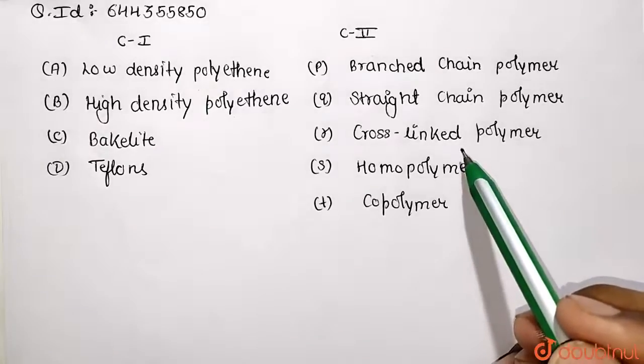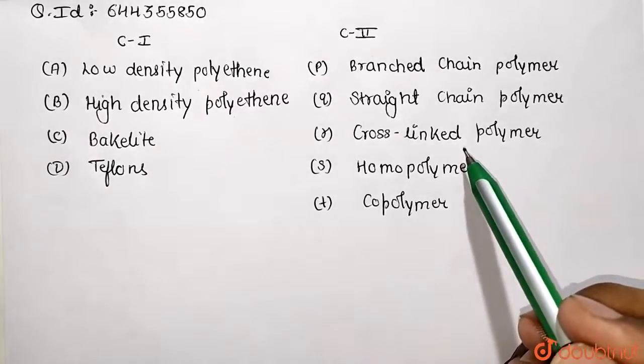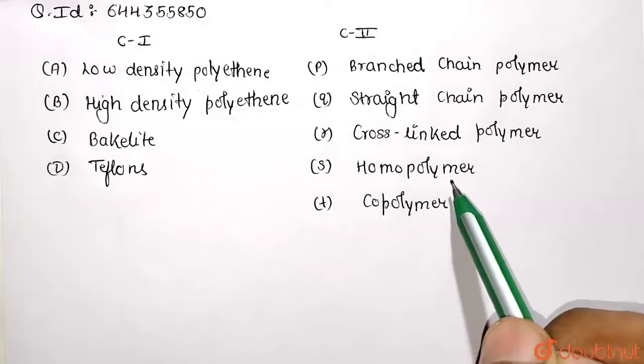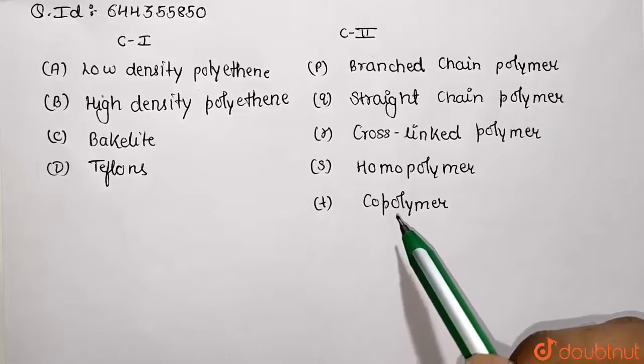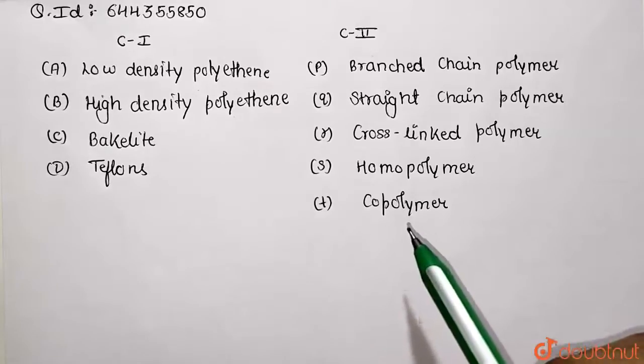Homopolymers are made from a single type of monomeric unit. Copolymers are made from different types of monomeric units. Now let's match the following.